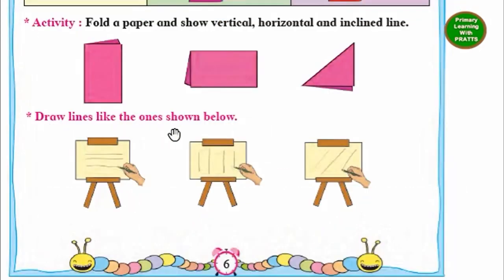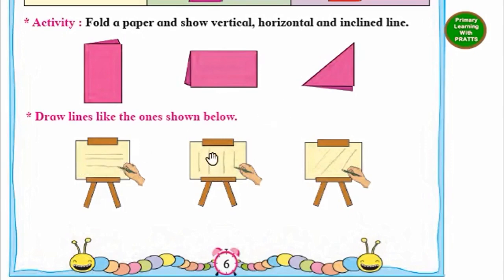Draw lines like the ones shown below. So how these girls have drawn, they are telling us also to draw. These are horizontal or sleeping lines. These are called vertical or standing lines. And these are sloping or inclined lines.